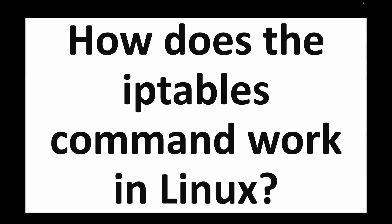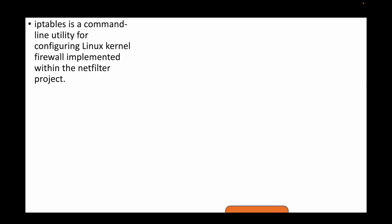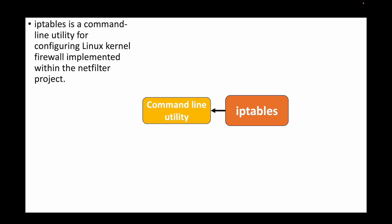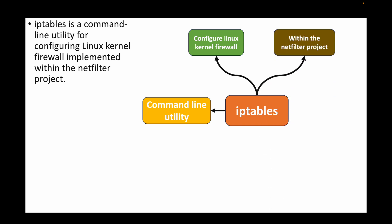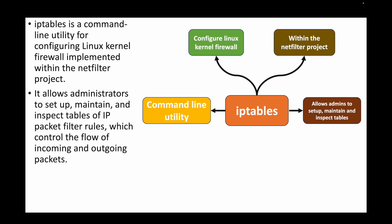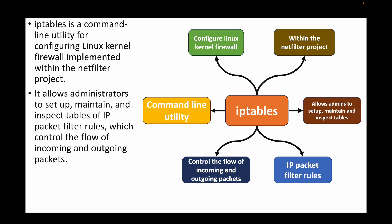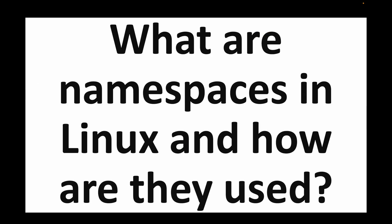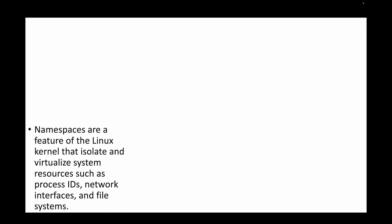The next question is: how does the iptables command work in Linux? iptables is a command-line utility used to configure firewalls — for example, allowing specific port numbers from specific sources. It is implemented within the Netfilter project, and as an admin you can use it to set up, maintain, and inspect IP packet filter rules, controlling the flow of incoming and outgoing packets. You can think of it as similar to security groups in AWS EC2.